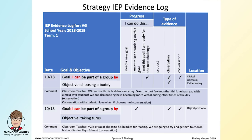For the second goal — taking turns — the family and team decided they would still work on it because they didn't yet have three pieces of evidence. They had the observation of him doing it in reading, and a conversation with the classroom teacher: 'VG is great at choosing his buddies for reading; we are going to try and get him to choose his buddies for phys ed.' So this goal stays in the evidence log and we could choose to add another one.